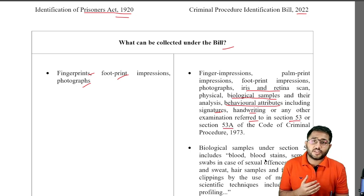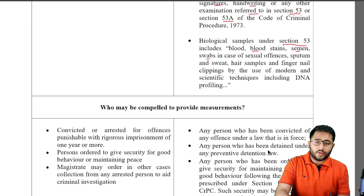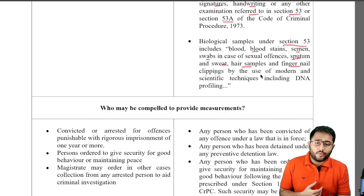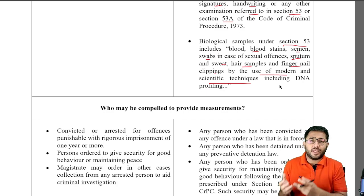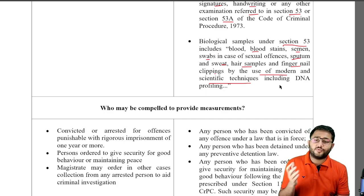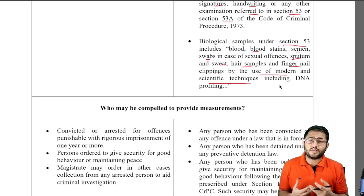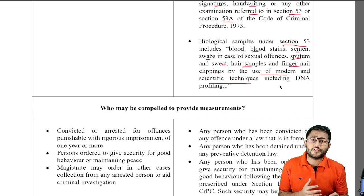The biological sample collection under section 53 talks about how blood, bloodstains, semen, swabs and septum, sweat, hair samples, fingernail clippings — everything that can be taken with the use of modern scientific techniques including DNA profiling. And section 53A says that you can also take the name, age as well as any bodily marks or injuries that the person has. So with section 53A, the Criminal Procedure Identification Bill expands the type of samples that can be collected.